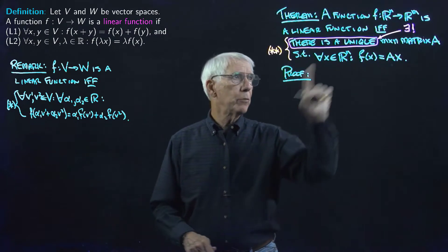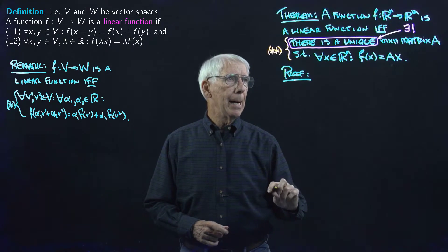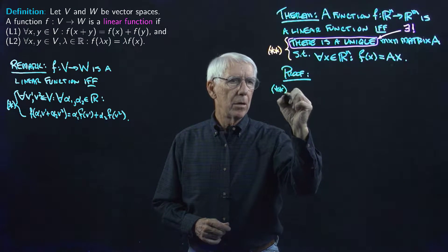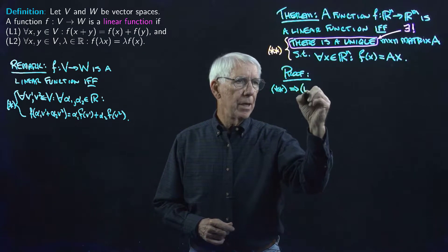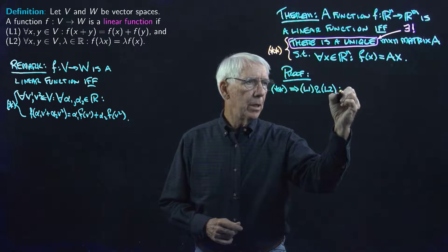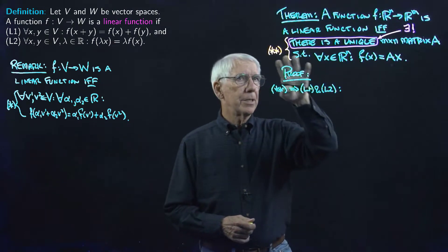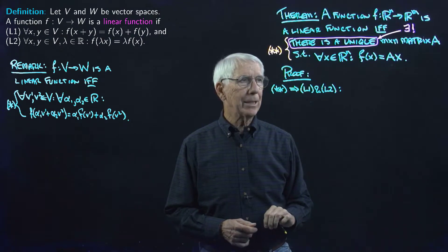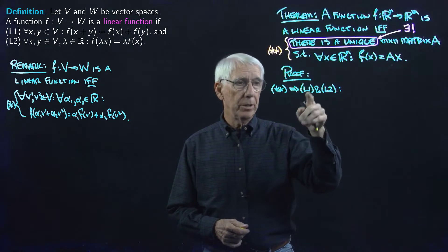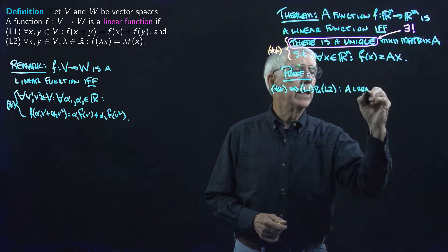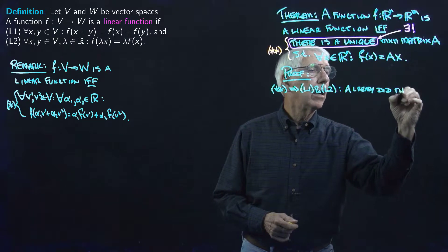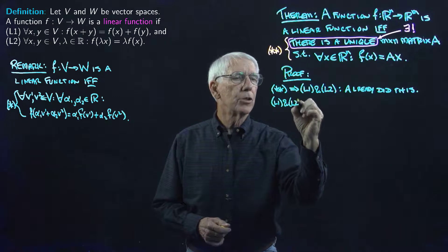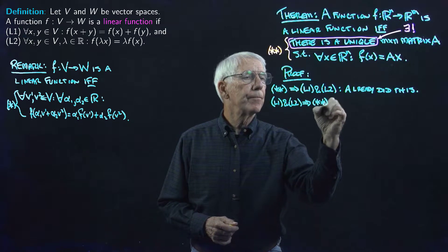Let's see if we can prove it. We have to go both ways because of the if and only if. Note that the double star condition implies L1 and L2, because that's what we already did—the double star condition says we have a matrix and a function defined by matrix multiplied by vector, and we showed that gives L1 and L2, so we don't have to prove it again. The key is to go the other way: we need to show that L1 and L2 imply double star.